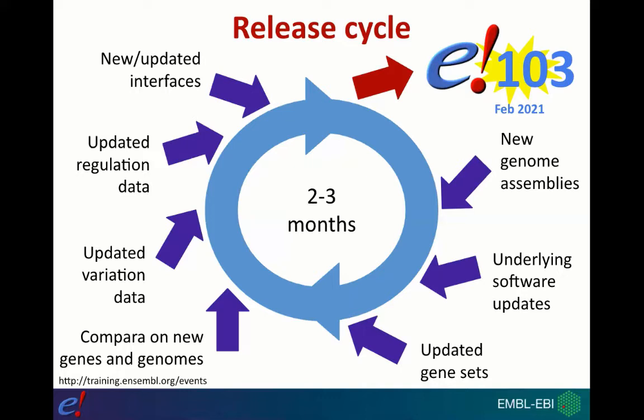Importantly, we keep Ensembl archives available for five years. If you're using Ensembl next month or in the summer and want to see what the data looked like when you first started using it — for example in release 102 — you can go back to the archives. This means everything is traceable and you can see how data might have changed, or whether there's been a new phenotype association to your gene of interest. Ensembl Genomes works similarly but is a younger project, currently on release 49.